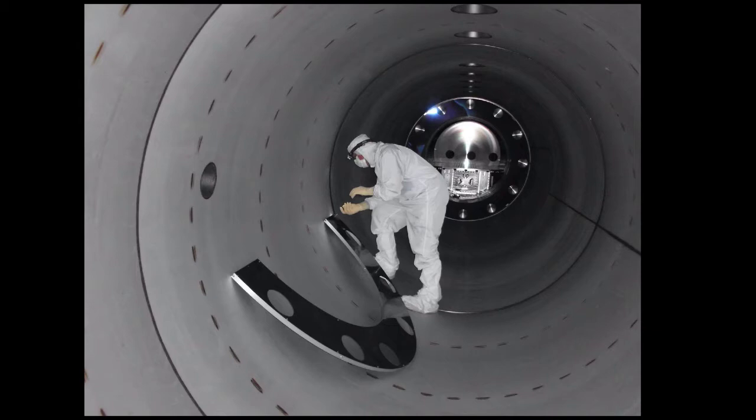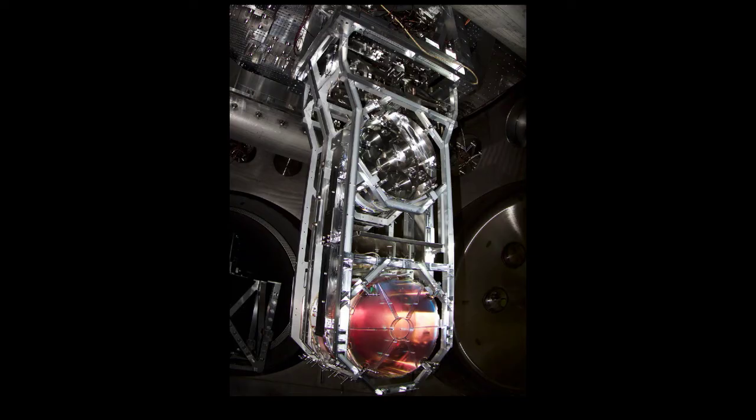This is inside one of the tubes during construction. This is one of the mirrors that hangs at the end. Actually, this thing down at the bottom is the actual mirror. All the stuff above it is basically the structure to hold this in place. It's suspended from four silica threads.